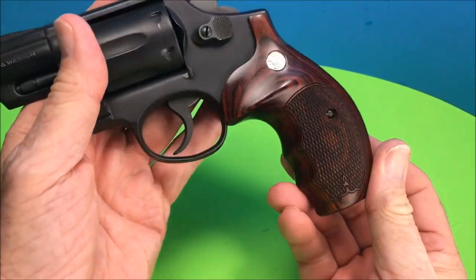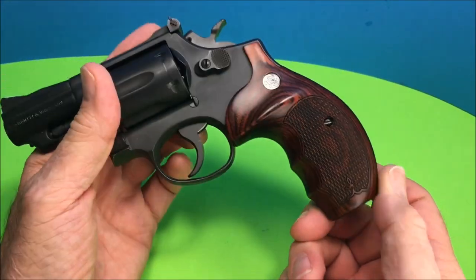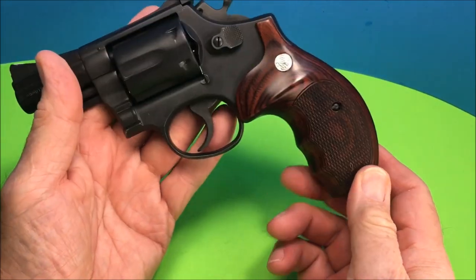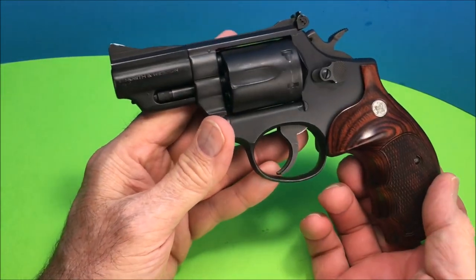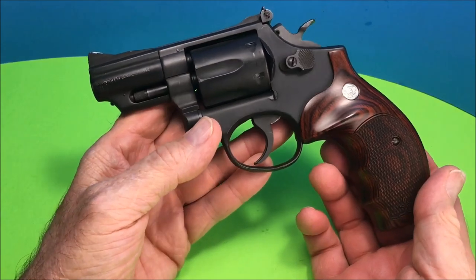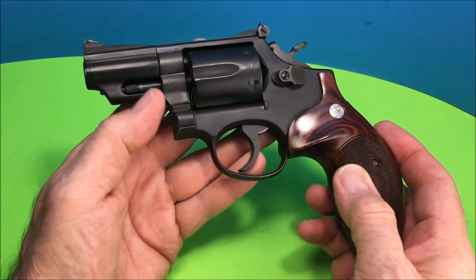I got these grips from Altamont, they're similar to the ones they put on the Talo edition. You can get this gun in stainless steel Talo, the modern one with 7 shots, 686.